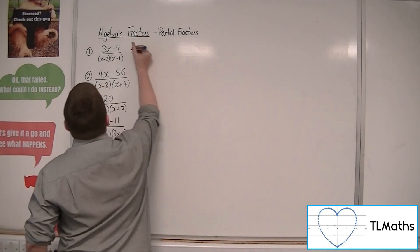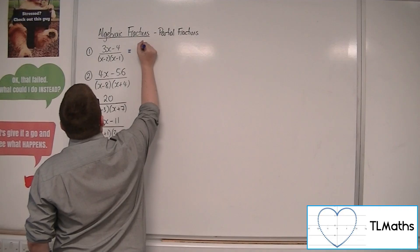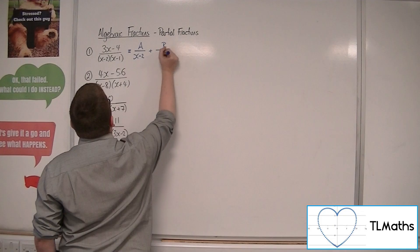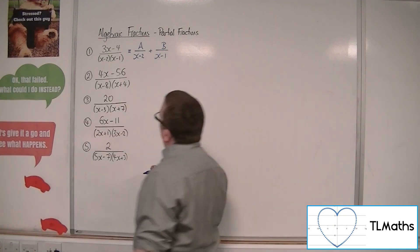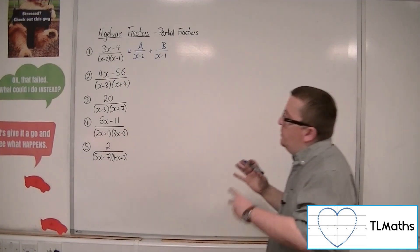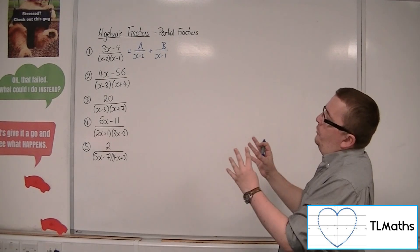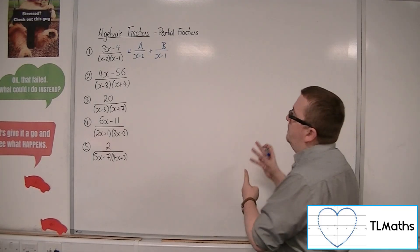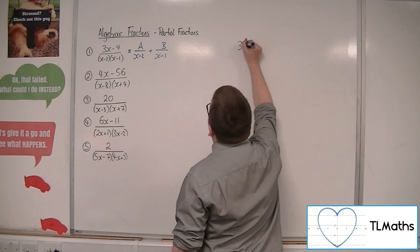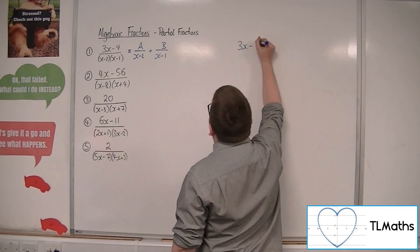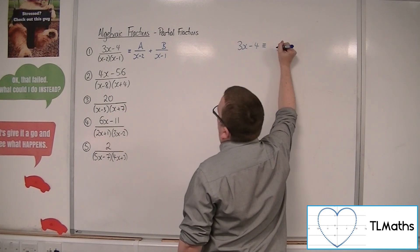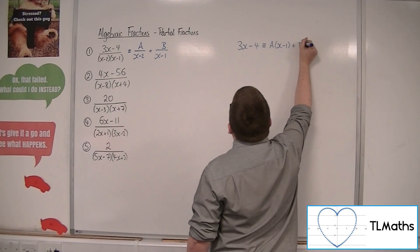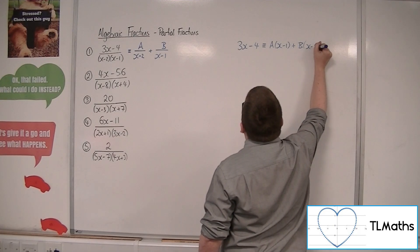We want to write that as A over (x - 2) plus B over (x - 1). We multiply both sides by (x - 2)(x - 1), and we get: 3x - 4 is equivalent to A(x - 1) plus B(x - 2).